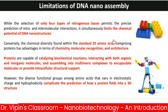A major limitation of DNA nano assembly is that starting with only four legos — the four nucleotides — limits functionality. While selecting only four types of nitrogenous bases permits precise prediction of intra and intermolecular interactions, it simultaneously limits the chemical potential of the DNA nanostructure. Conversely, the chemical diversity of the 20 amino acids comprising proteins has advantages in terms of chemistry, molecular recognition, and architecture.